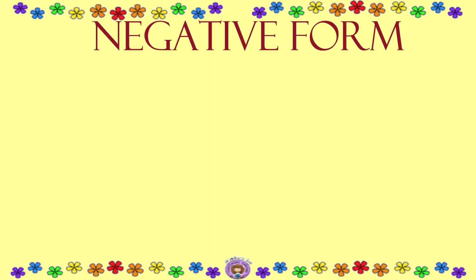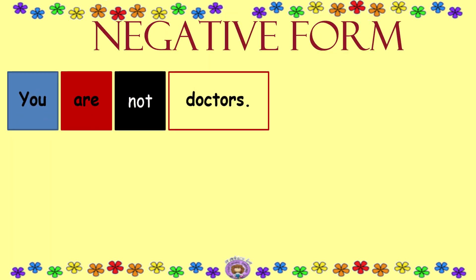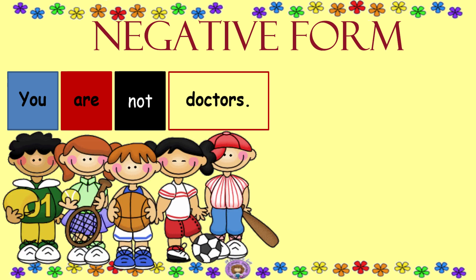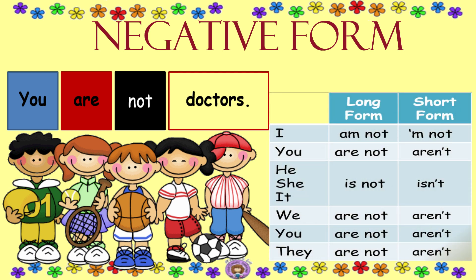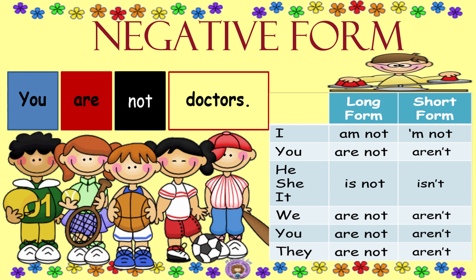Negative form. We have long forms and short forms. I am not, or I'm not. You are not, or you aren't. He is not, or he isn't. She is not, or she isn't. It is not, or it isn't. Plural: we are not, we aren't. You are not, you aren't. They are not, they aren't.